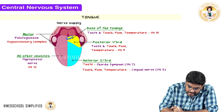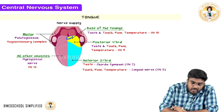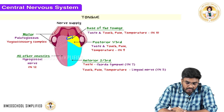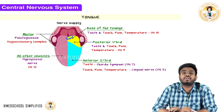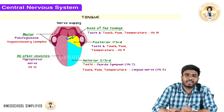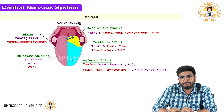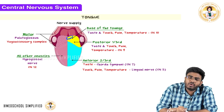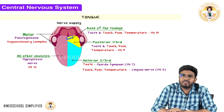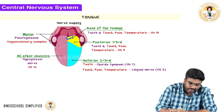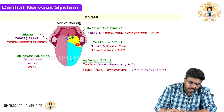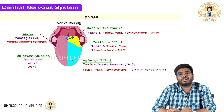Who will carry touch, pain, and temperature from the posterior one-third of the tongue? From the posterior one-third, touch, pain, and temperature are carried by the ninth cranial nerve — the glossopharyngeal nerve.